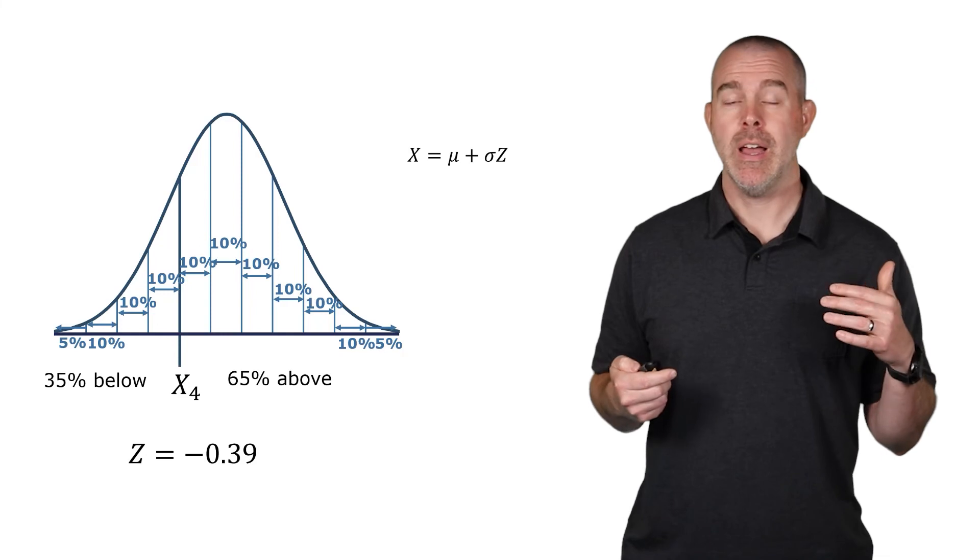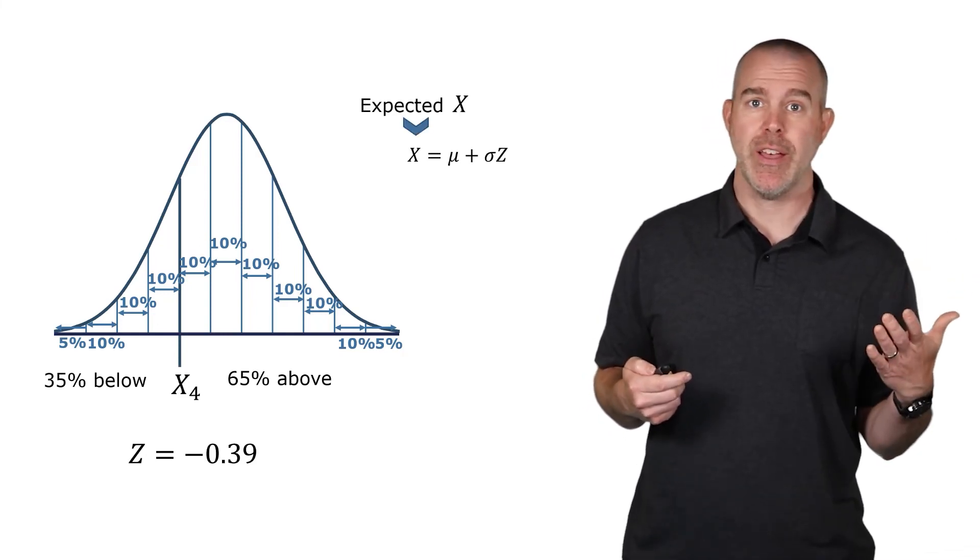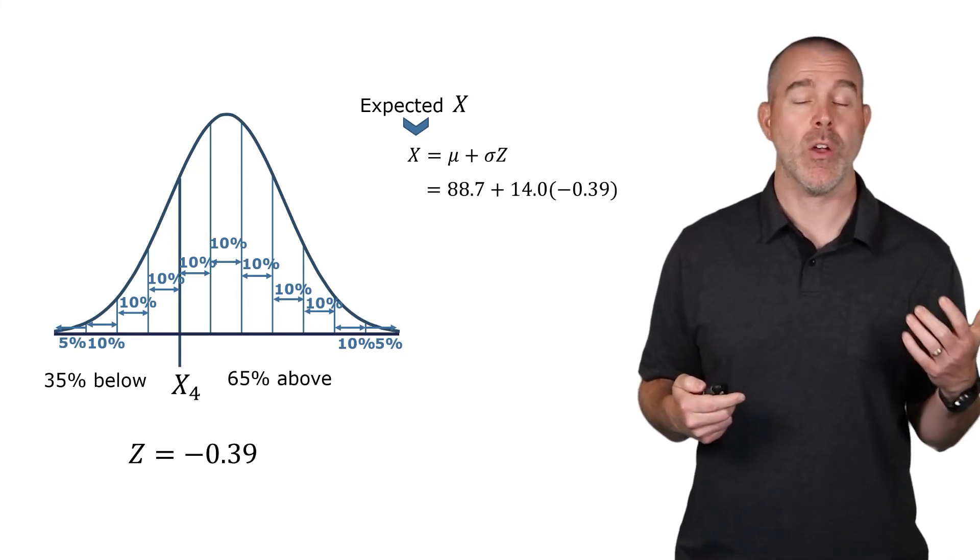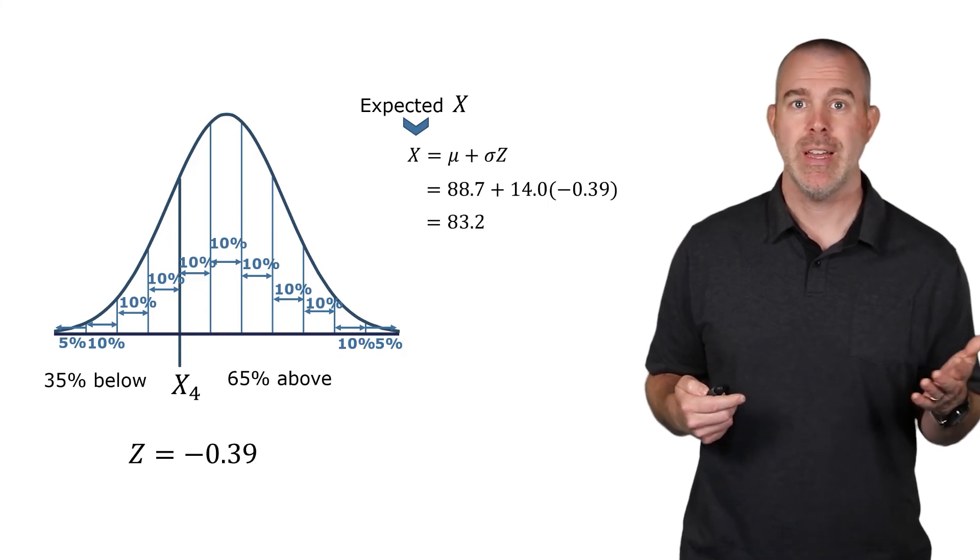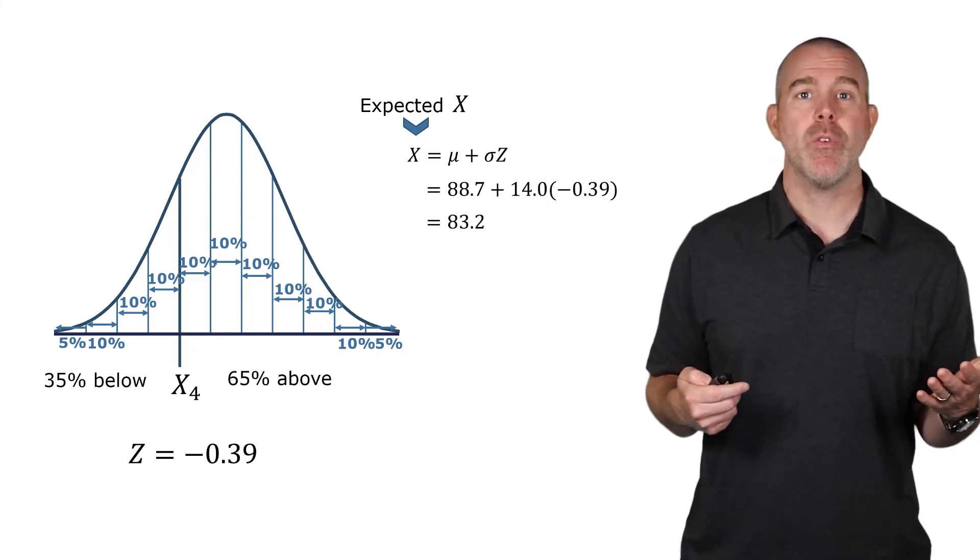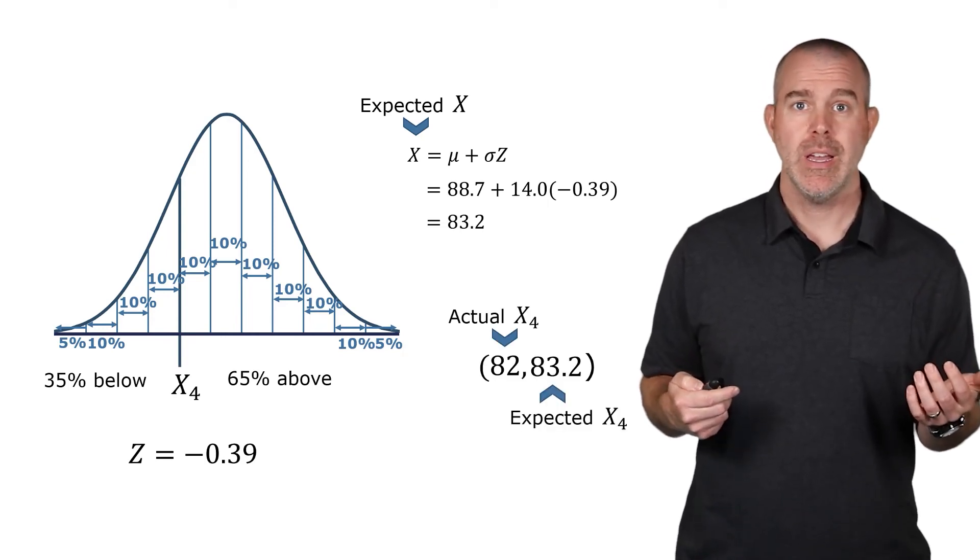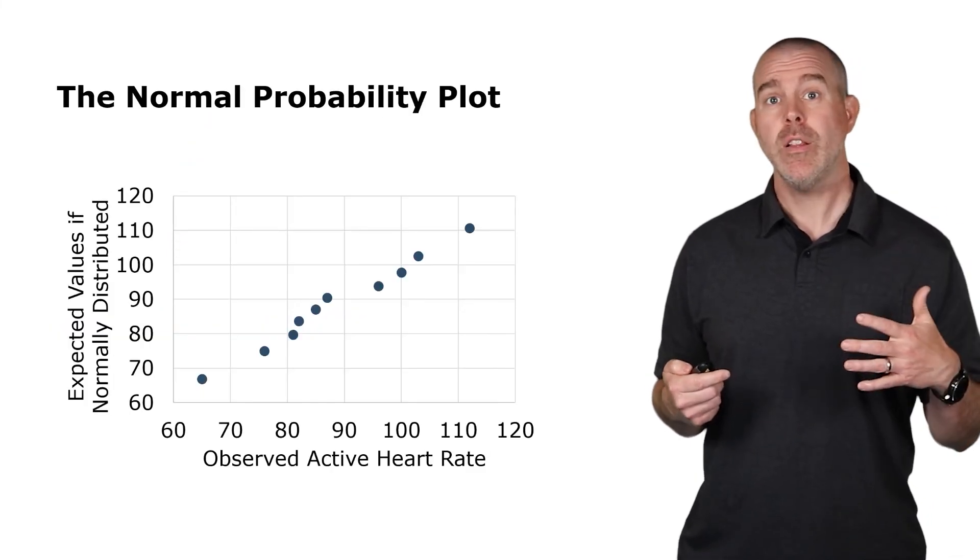And then in our formula, x equals mu plus sigma z, we're going to calculate the expected x value. We'll plug in the mean and standard deviation and this z that we calculated, that corresponds to 35% below and 65% above. Simplify those, we get 83.2. Now the actual fourth one in order is 82. The expected one is 83.2. If we graph all of these, it looks something like this.